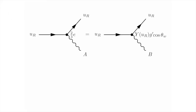So the total interaction strength of the right-handed up with the B is given by G prime, the strength of the interaction, the cosine of the weak mixing angle, and what we call the weak charge of the right-handed up, denoted by Y of UR. This leads to an equation. Since both sides must be equal, the strength of these interactions must be equal. We learn that Y_UR times G prime times the cosine of the weak mixing angle must equal two-thirds times the electric charge.